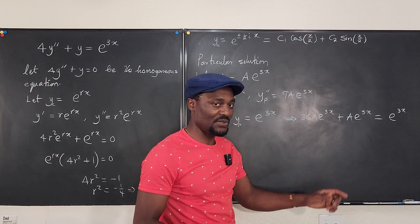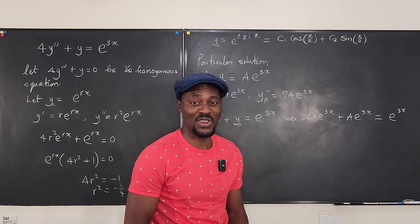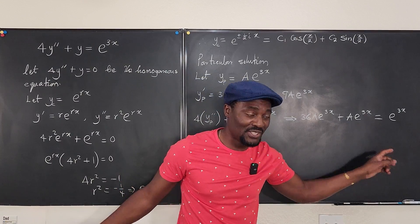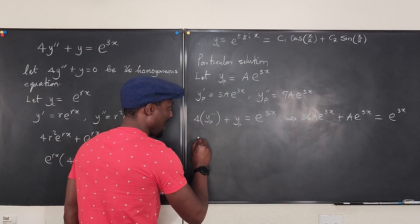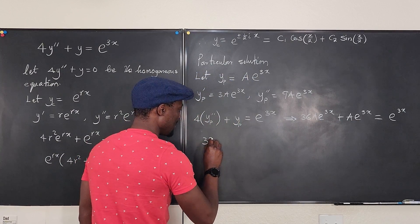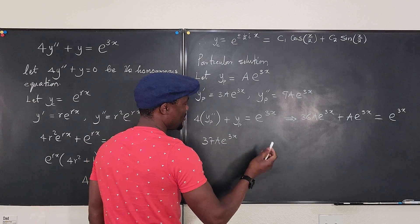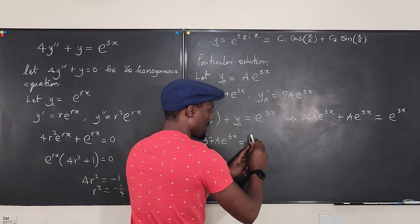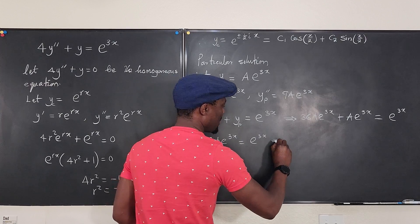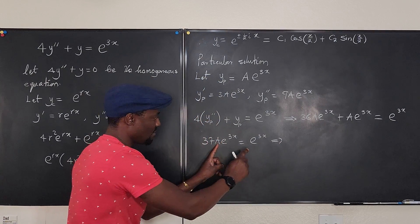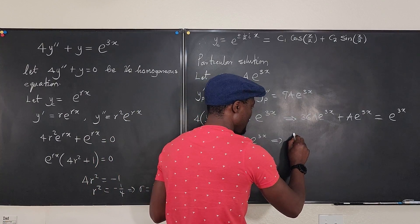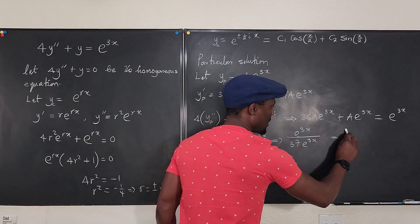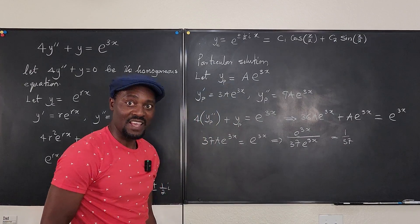Since e^(3x) is never zero, we can divide both sides by e^(3x), giving 37A = 1. Therefore A = 1/37.